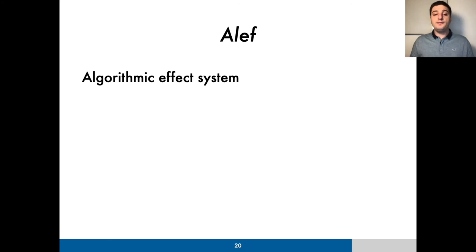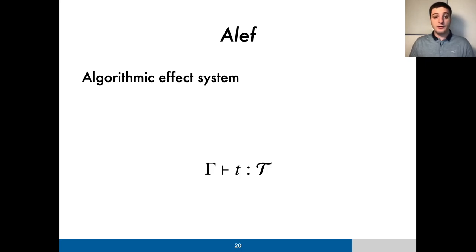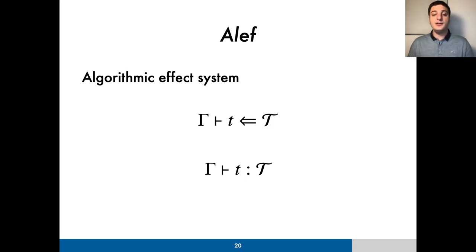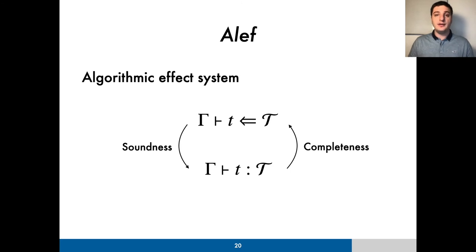As I said before, we introduced two effect systems for Aleph. First, a declarative one that serves as a conceptual framework for the second one, the bidirectional algorithmic system. To make sure that all of the declarative system's properties are also valid in the algorithmic system, we establish a correspondence between the two. To do so, we prove that the algorithmic system is both sound and complete with regard to the declarative system. With this, we were able to trivially extend the declarative system's type safety properties to the algorithmic system.